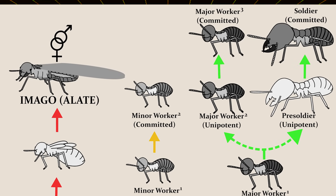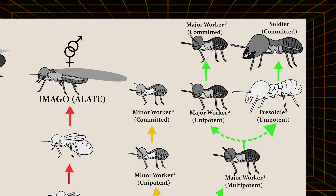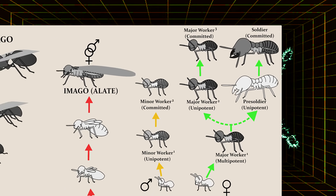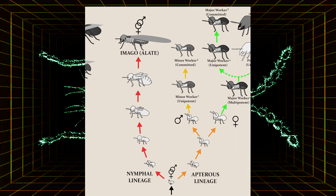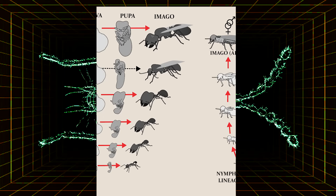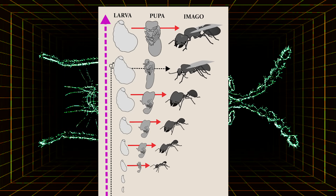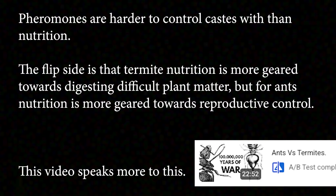What this means is that just about any old termite can become a reproductive queen or king under the right circumstances, whereas in ants, bees, and wasps, this is not the case, and some females are born sterile, and others are born to be queens.